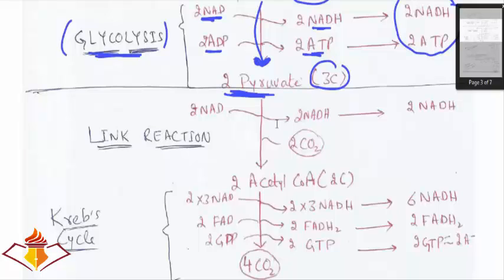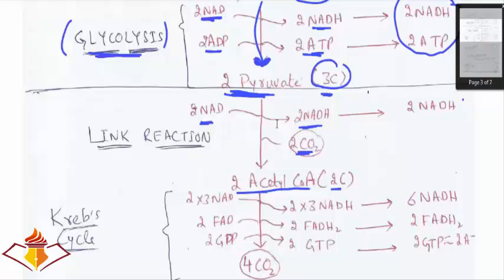This pyruvate then enters the mitochondria, where it is oxidized to acetyl-CoA — this is the link reaction. Two pyruvates enter, producing 2 acetyl-CoA. Since pyruvate has 3 carbons and acetyl-CoA has 2 carbons, 1 carbon goes to CO₂ per pyruvate. So from 2 pyruvates we get 2 CO₂ and 2 acetyl-CoA. The net product of the link reaction is 2 NADH.